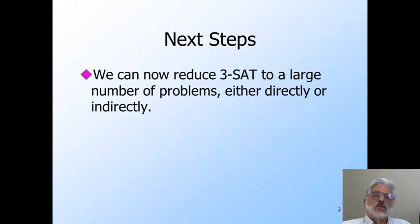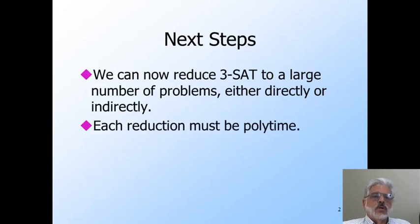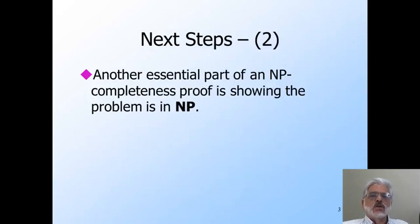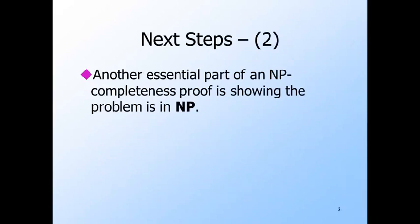These reductions can be directly from 3SAT or from another problem that we previously proved NP-complete. Remember, the key issue is that each reduction must be in polynomial time. However, in most cases the construction is computationally simple, so as long as the output is of length polynomial in the input, it will be easy to argue that the running time of the transducer is polynomial. Of course, if a problem is NP-complete, it must be in NP. Usually this part of the proof is quite simple since a non-deterministic polytime Turing machine can use its non-determinism to guess a solution in linear time and then check it in some polynomial amount of time.